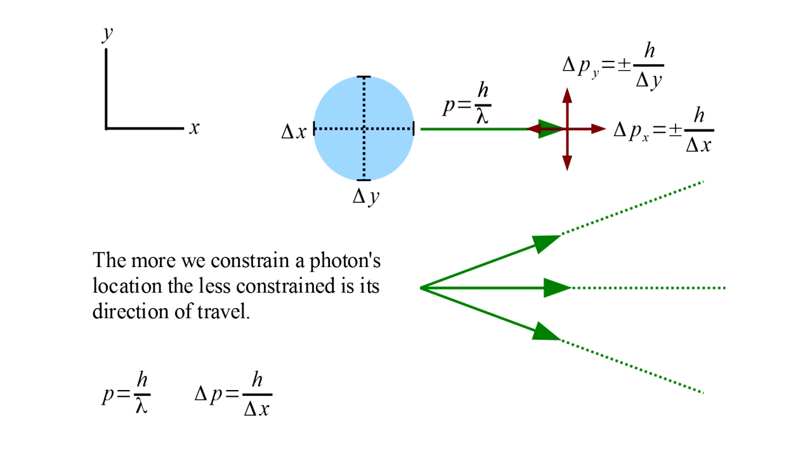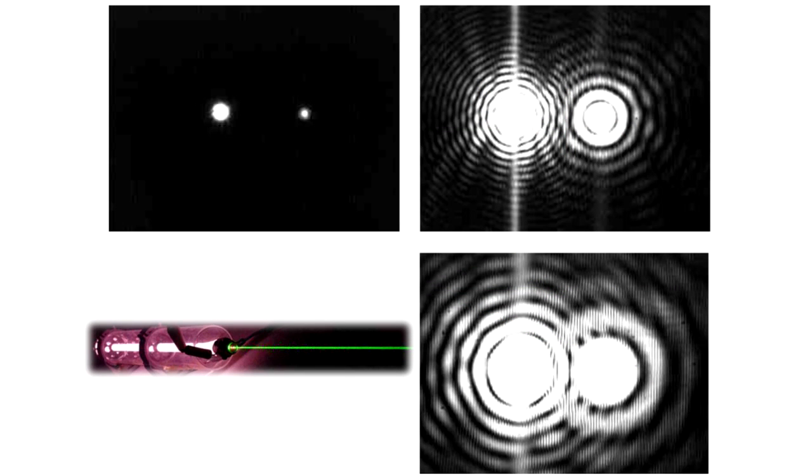Indeed, the uncertainty in momentum becomes as large as the momentum itself when photon position is constrained to the scale of a wavelength. The uncertainty principle goes hand in hand with the phenomenon of diffraction we looked at in a previous video. A laser beam spreads very little because the width of the beam is actually quite large, much, much larger than a wavelength. The more we try to constrain photon position by passing light through a tiny pinhole, the more uncertain is photon momentum, and this shows up in the spreading of the light beam into a diffraction pattern.